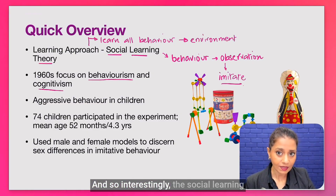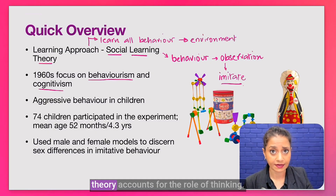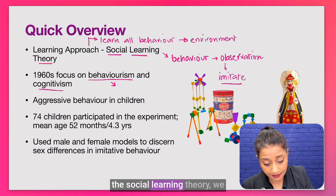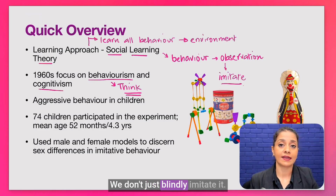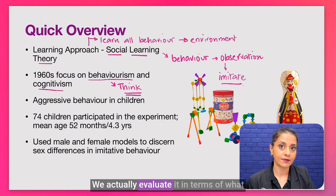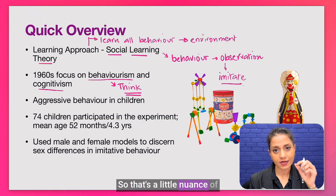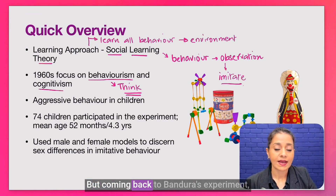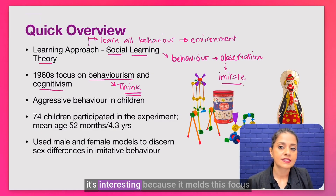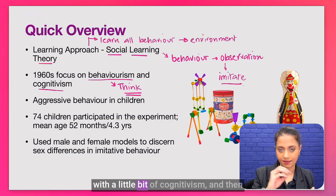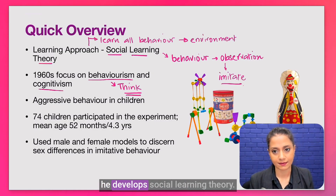Interestingly, social learning theory accounts for the role of thinking. In social learning theory, we think about the model's behavior — we don't just blindly imitate it. We actually evaluate it in terms of the consequences of that behavior. That's a key nuance of social learning theory. Bandura's experiment melds this focus on behaviorism with a little bit of cognitivism, and from that he developed social learning theory.